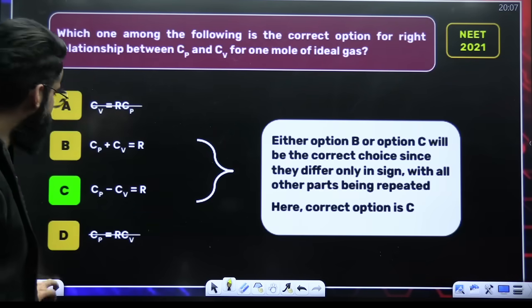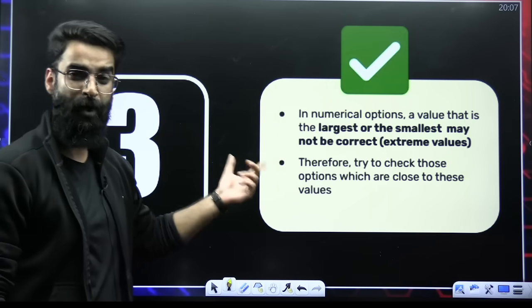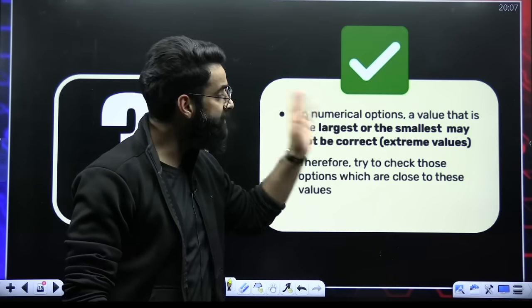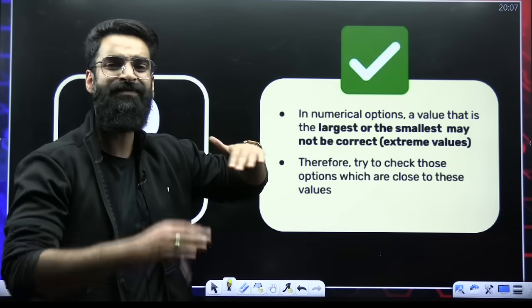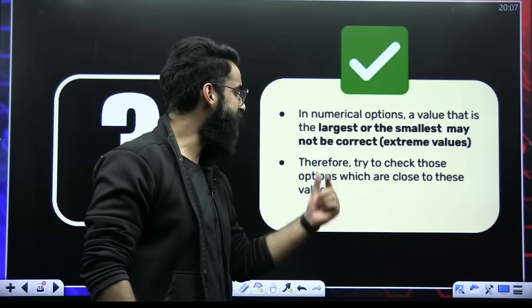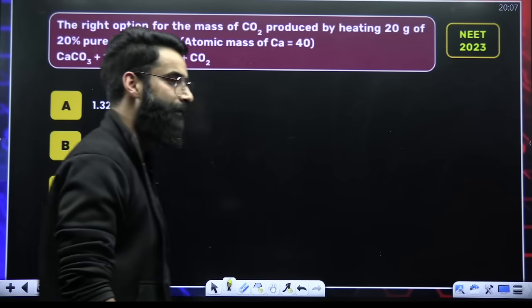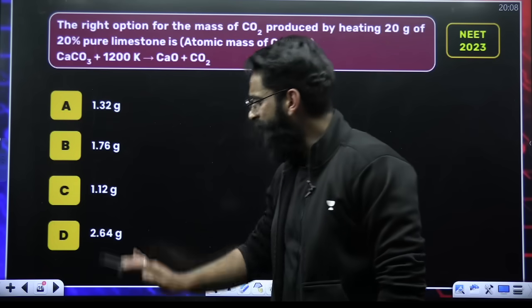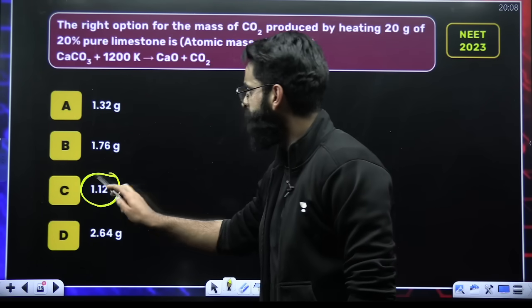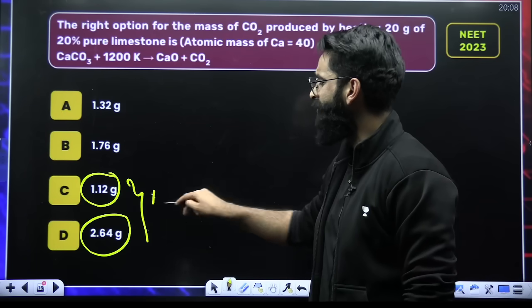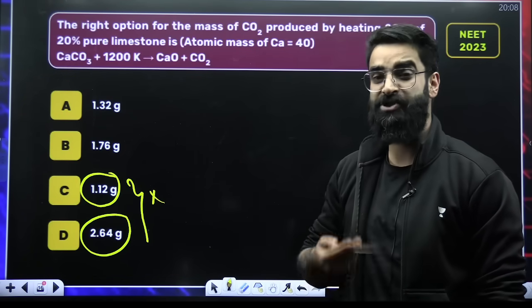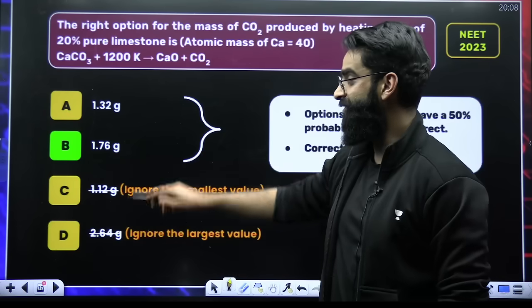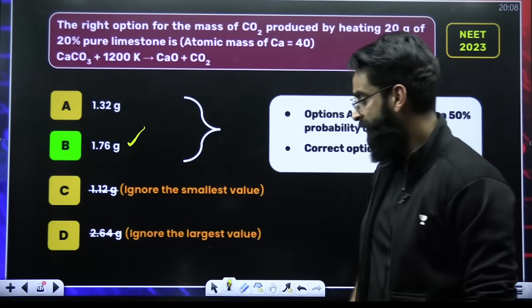This is the most important one — have a proper eye on this. In numerical options, a value that is the largest or smallest may not be correct. So extreme values in the options you are going to avoid. Try to check those options which are close to intermediate values. If you look at this particular question and you are unable to solve it, look at the numerical values: minimum value is 1.12, maximum value is 2.64. So these two I am not going to select. Most of the times the answer is going to be among A and B. It's option B here — that is the correct answer.